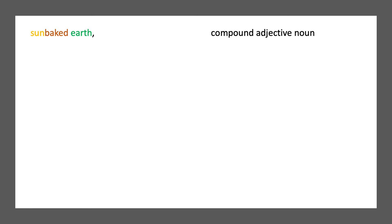The first thing that Agnes smells, sun-baked earth, has an adjective and a noun, but the adjective itself is a compound of 'sun' and 'baked.' So sun-baked earth has a kind of hidden complexity, though it's one of the shorter elements of the list.